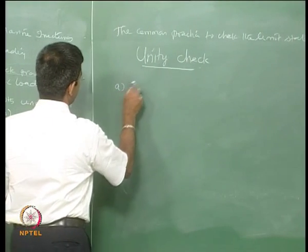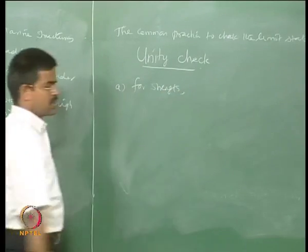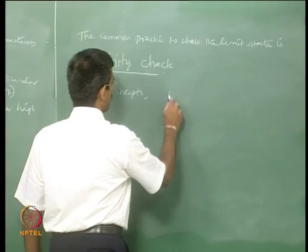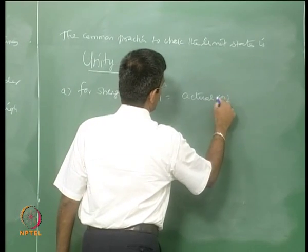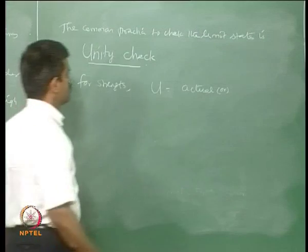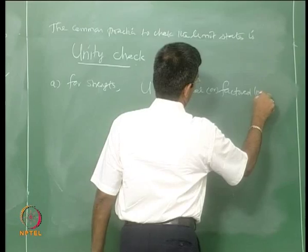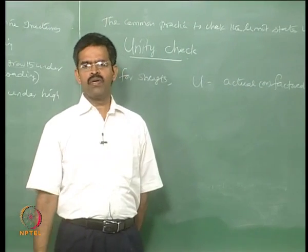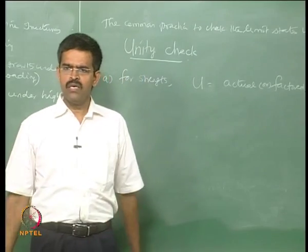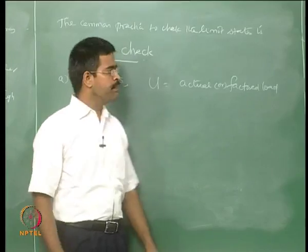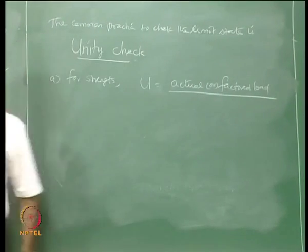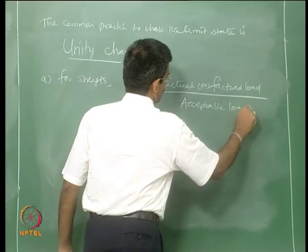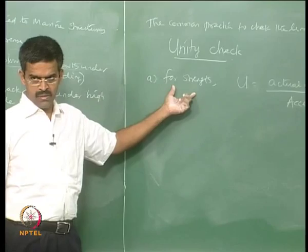For the unity check for strength, the equation is: factored load divided by acceptable load. You multiply the actual load by a specific factor accounting for different combinations of loads due to uncertainties in occurrence and magnitude. That is the unity check generally used for strength.